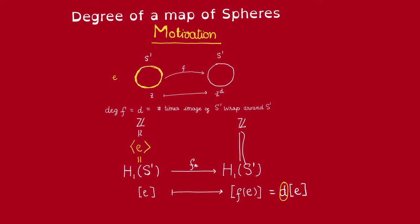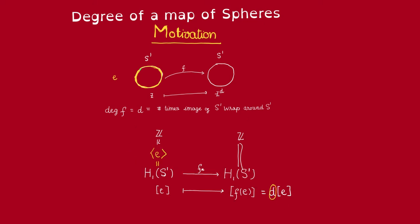In this specific case, that natural number is d. Thus, this gives us a way to characterize the degree of f. It's gonna be the unique integer such that the following map commute.